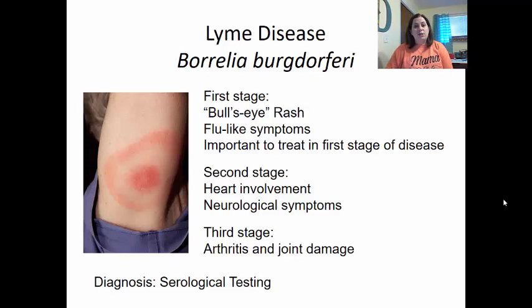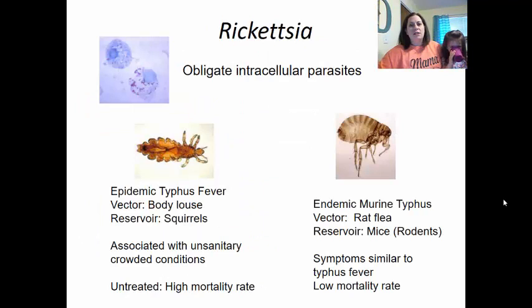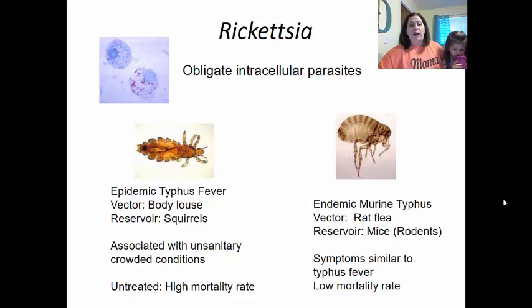Diagnosis for Lyme disease uses serological testing. Rickettsia is an obligate intracellular parasite — it must gain access into a cell in order to divide. It can cause epidemic typhus fever, with the vector being body lice and the reservoir coming from squirrels. It is associated with unsanitary crowded populations. If left untreated it has a very high mortality rate, with a high fever lasting up to two weeks. It then invades blood vessels, blocking them off, causing tissue damage and death to the organs those vessels supply.